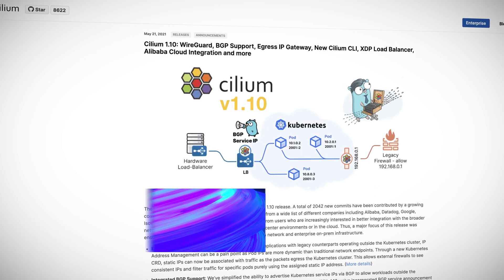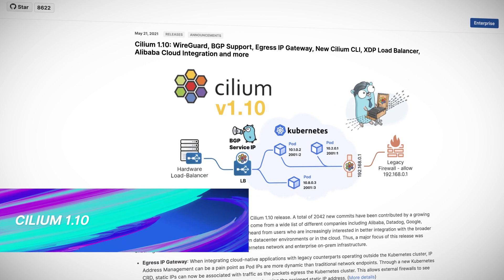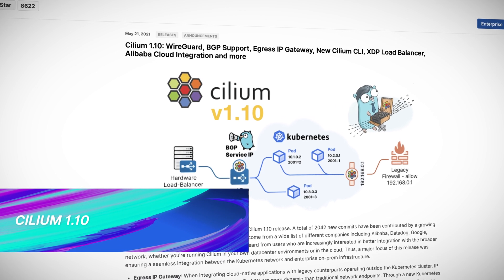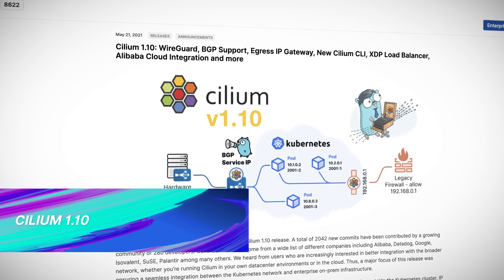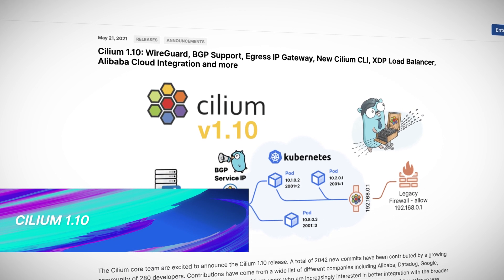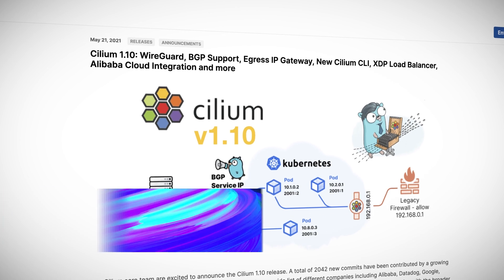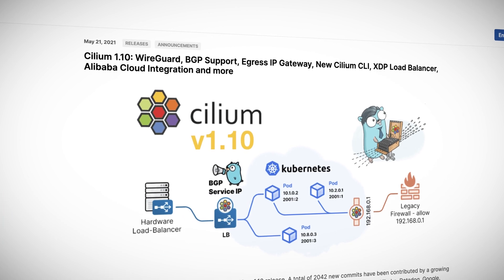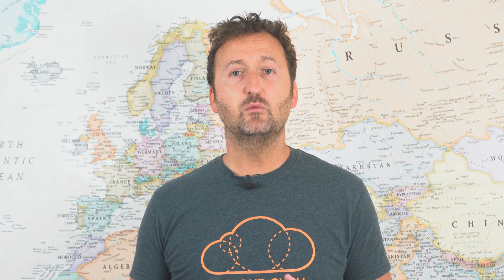The team at Cilium released 1.10 of the popular networking subsystem for Kubernetes, and it's a pretty big release. Congrats to the team involved, and we'll take a look at some of the interesting bits from the release in the deeper dive section.